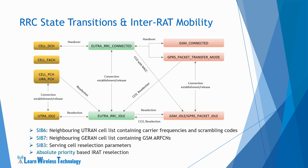Based on measurements of serving and neighboring cells, a cell is identified to which the UE should camp on. The IRAT reselection is based on absolute priorities, where the UE camps on the highest priority RAT available. The priorities are signaled to the UE via system information or RRC message. Based on absolute priorities and the ranking process, IRAT reselection is performed from LTE to WCDMA or GSM.